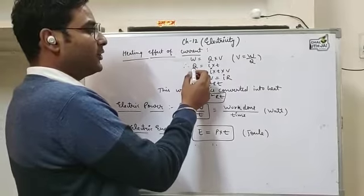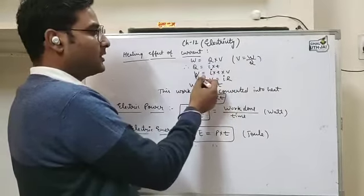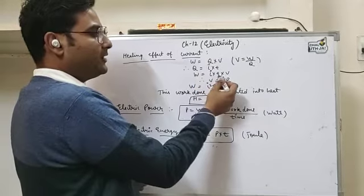Now, we know that charge Q equals I into T. We put this value here. W equals I into T into V.